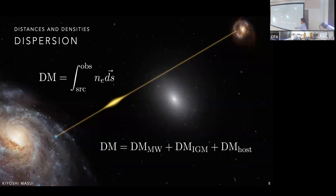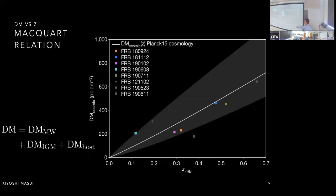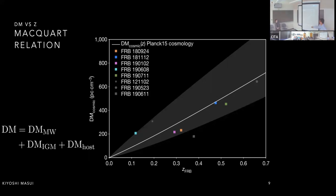This DM measurement is powerful because it counts every free electron along the line of sight — contributions from the Milky Way, the intergalactic medium, and the host galaxy. Typically, it's the IGM that dominates, which led to the famous Macquart relation: the IGM component of the dispersion measure is expected to correlate with distance, because the more IGM you traverse, the larger that integral becomes.